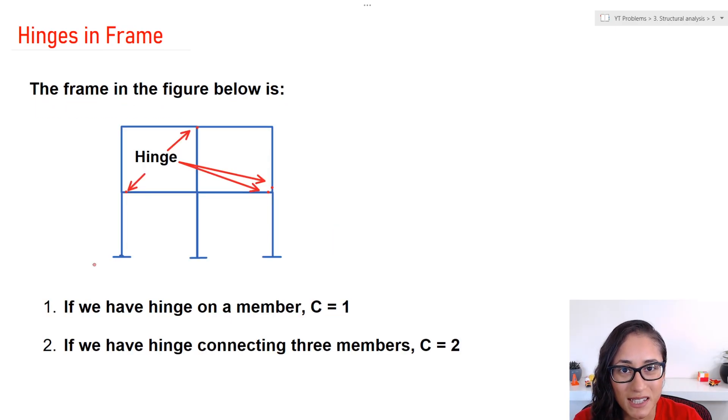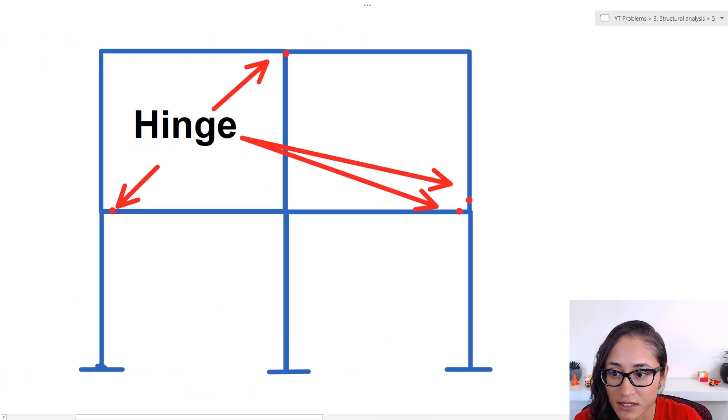If we need to calculate how many hinges we have for frame analysis, this is what you need to keep in mind. So if we have a hinge that is on a member, we count C as one. So for example, if we take a look at these, this one is on one member, right? This one is on one member, this one as well. If I put one here as well, that would be counted as one. So when you have this case, you count C as one.